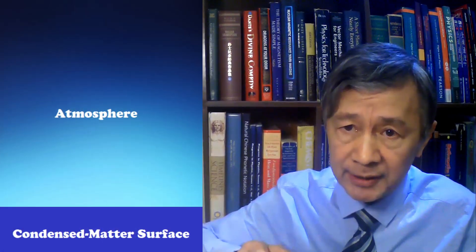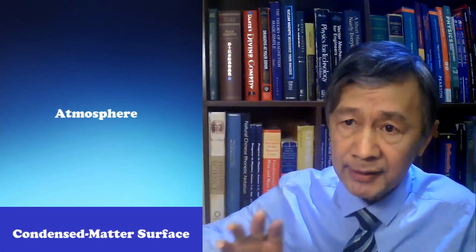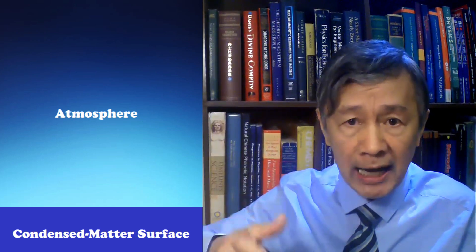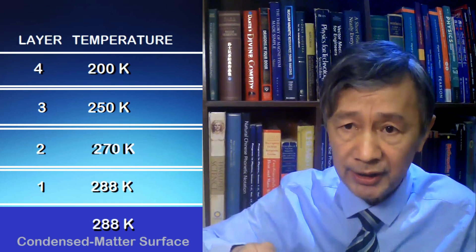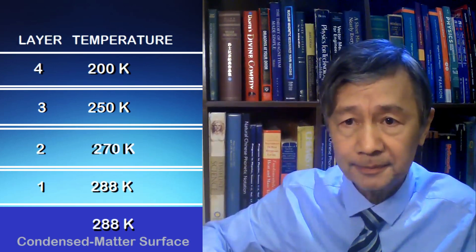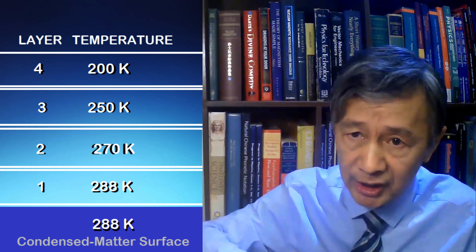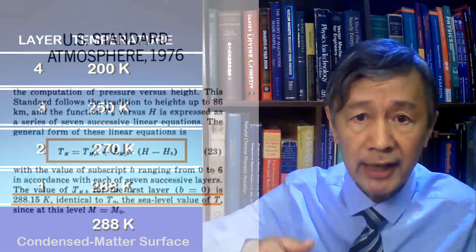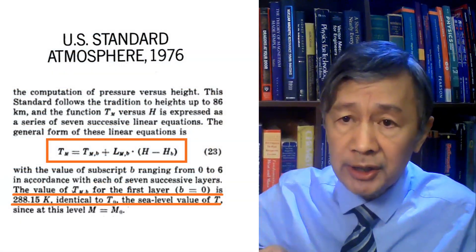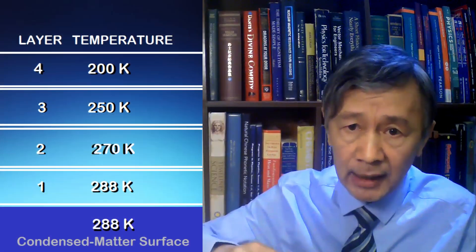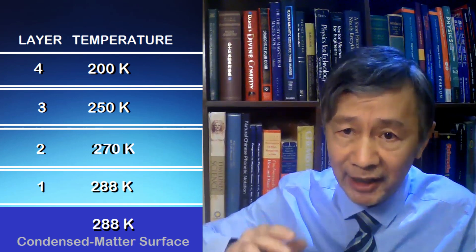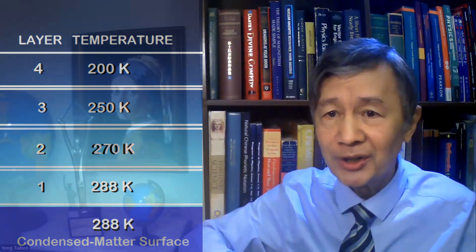To facilitate my explanation, this approximates the real atmosphere as four isothermal layers overlaying on the condensed matter surface of the earth, whose equilibrium temperature is 288 Kelvin. Each of the four layers has constant temperature in accordance with the U.S. atmosphere standard. Notice that the temperature of the first layer is the same as the surface — 288 Kelvin as shown in this diagram — because it is at thermal equilibrium with the surface.